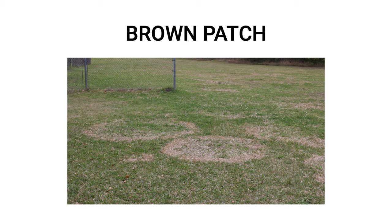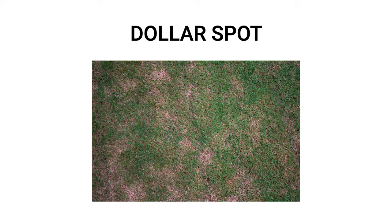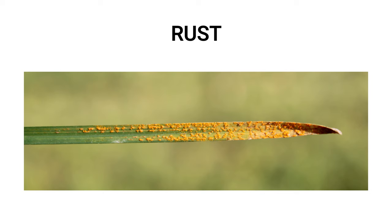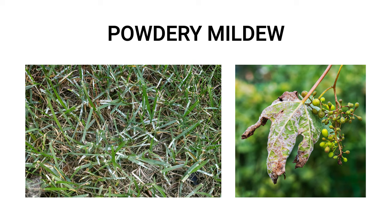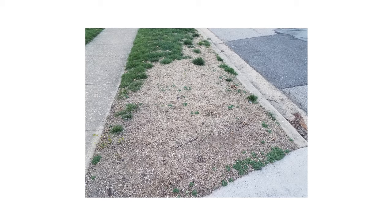Here is a short list of common lawn diseases and what they look like. Brown patch is a common and widespread lawn disease that appears as browned circular patches of grass. Dollar spot creates many smaller circular patches of discolored grass. Rust is indicated by your grass blades being coated with a distinctive orange-like rust appearance, and powdery mildew coats your grass or other ornamentals with a whitish powdery fungal substance.